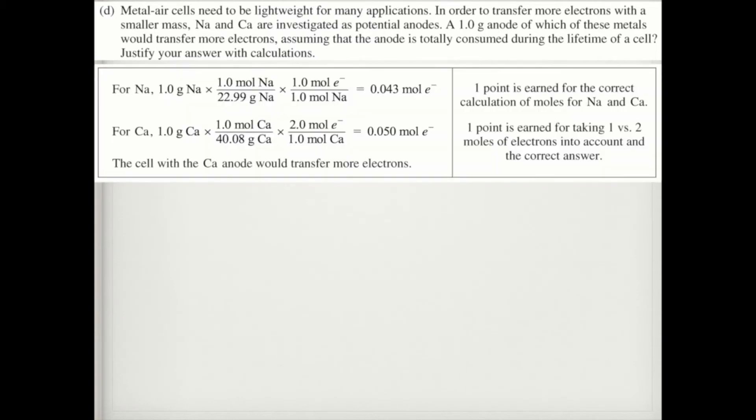In part D, it says metal air cells need to be lightweight for many applications. In order to transfer more electrons with a smaller mass, sodium and calcium are investigated as potential anodes. A one gram anode of which of these metals would transfer more electrons, assuming that the anode is totally consumed during the lifetime of a cell. So we need to take one gram of each of these, sodium and calcium, and figure out the number of moles of electrons. So I've got to go from grams of each of them into moles, and then from moles into moles of electrons.